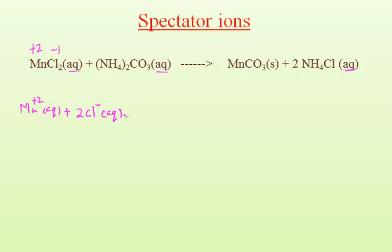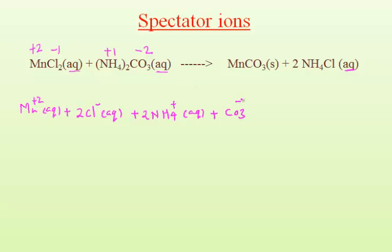The next reactant is ammonium carbonate, and it is made up of ammonium ion and carbonate ion. Ammonium ion shows plus 1 charge and carbonate ion shows minus 2 charge. There are two moles of the NH₄ group, therefore it produces two ammonium ions. There is only one carbonate group, so it produces only one carbonate ion.